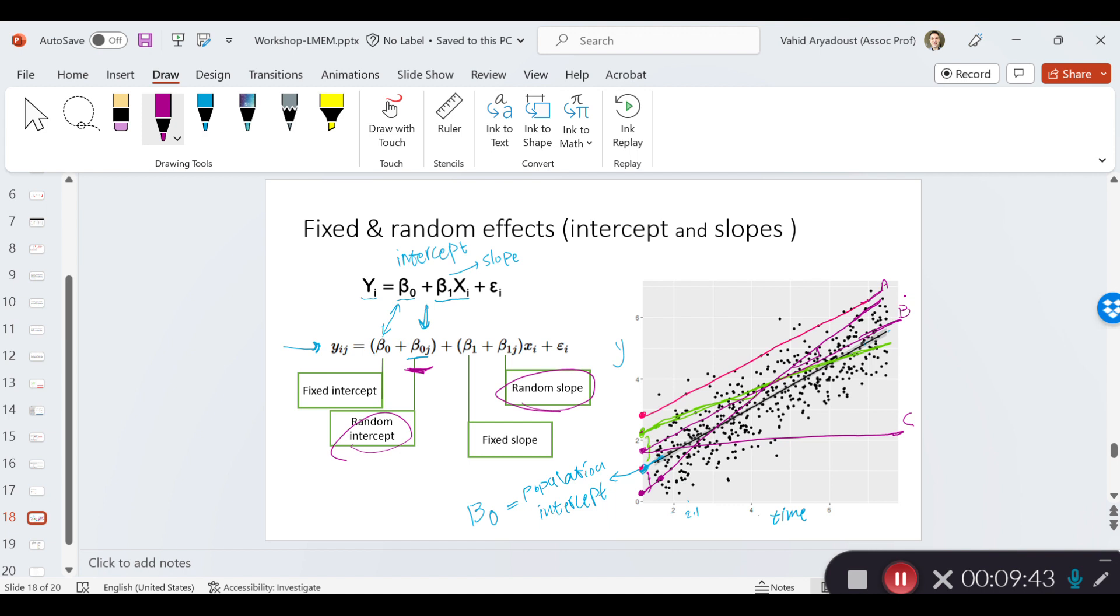In conclusion, in a linear mixed effect model, there are two random components. One is random slope and the other one is random intercept. Sometimes we incorporate both of them into our model and sometimes we incorporate only the random slope. And occasionally we may have random slopes, but no random intercepts. So there are different scenarios that we can imagine for a linear mixed effect model. I hope this brief presentation of what random slopes and random intercepts are has demonstrated how you can move from a regression model to a linear mixed effect model.